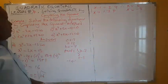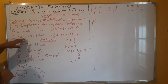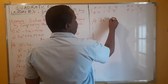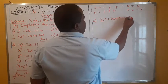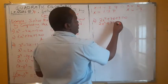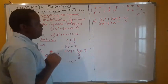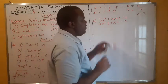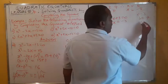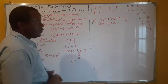Let's try another one — part B: 2x squared plus 7x plus 3 equals zero. The first step is to take the constant to the right-hand side, giving 2x squared plus 7x equals negative 3. Now step two: we identify b. Our b is 7, so we must find half of 7, which is 7 over 2.